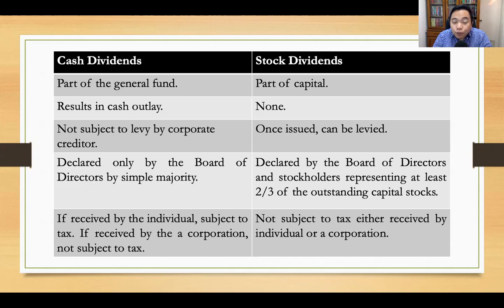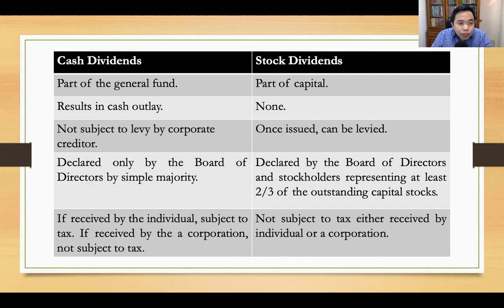A cash dividend is declared by the board of directors alone through a simple majority vote — concurrence of stockholders is not required. On the other hand, a stock dividend can only be declared by the board and stockholders representing at least two-thirds of the outstanding capital stock. Regarding taxation: a cash dividend received by an individual is subject to income tax as it is profit or gain; if received by a corporation, it is not subject to tax. A stock dividend, when declared, is not subject to tax whether received by an individual or a corporation.